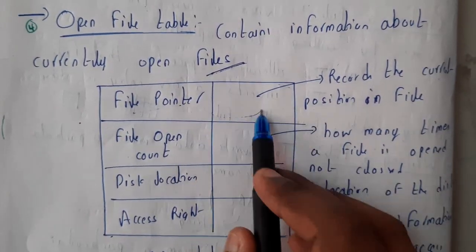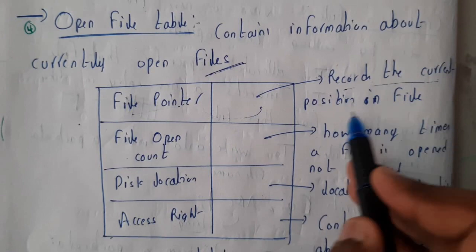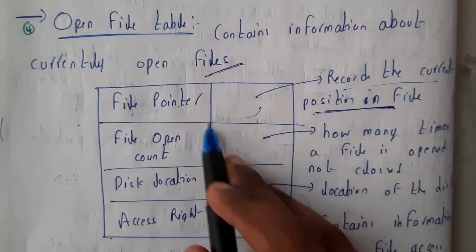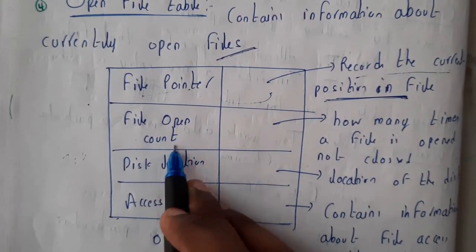We will be having a file pointer. So the file pointer location records the current position in the file. If we are reading the seventh line, 13th word, that location will be stored here. File open count...